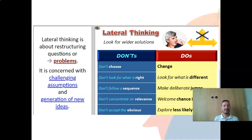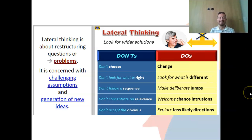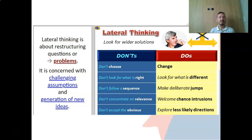Lateral thinking is about restructuring questions or problems. It's concerned with challenging assumptions and generating new ideas. It looks for wider solutions, not the obvious ones. Don't look for what is right — look for what is different. Don't follow a sequence; make deliberate jumps. Instead of going from point A to point B in the obvious sequence, think of something else. Welcome change, and don't accept the obvious — explore less likely directions.